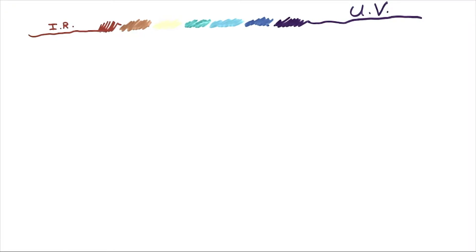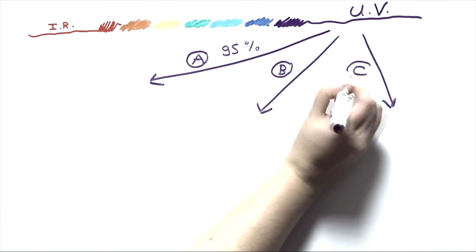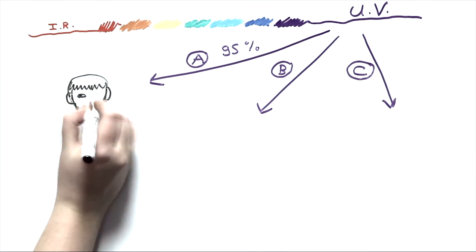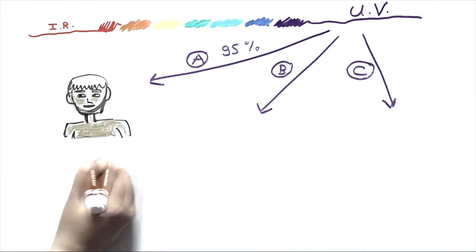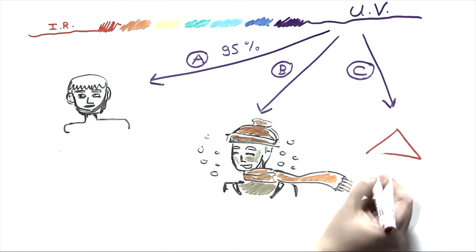Ultraviolet light is the one responsible for tanning and it exists in three types: UVA, B and C. UVA composes 95% of the UV rays and are responsible for the first rapid tanning. UVB serves the long-term tanning. Finally, UVC are the most dangerous ones but are blocked by the ozone layer.